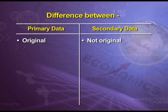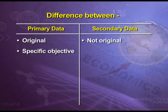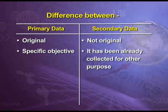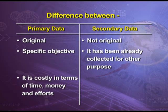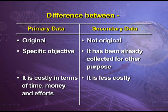Primary data is collected from its source of origin, whereas secondary data is collected by some other person for some other purpose and we are just using it for our own reference. The second difference is of specific objective: primary data is collected with a certain objective in mind, while secondary data has been collected for another purpose. The third and most important difference is cost: primary data is costly as it involves more time, money, and effort, whereas secondary data is less costly as it is already in printed form.